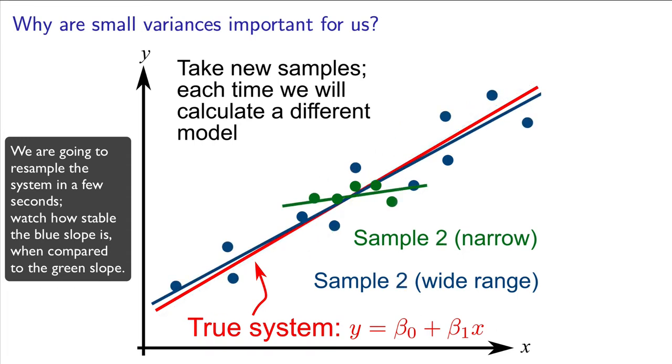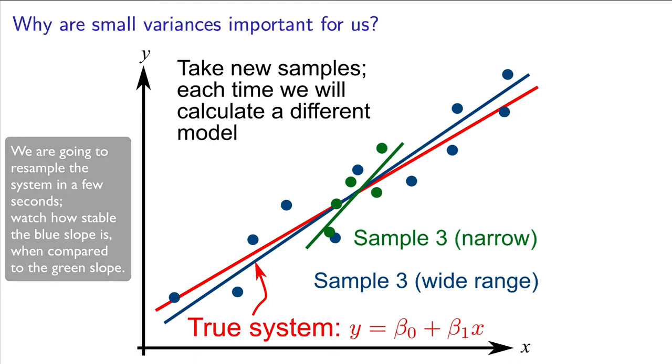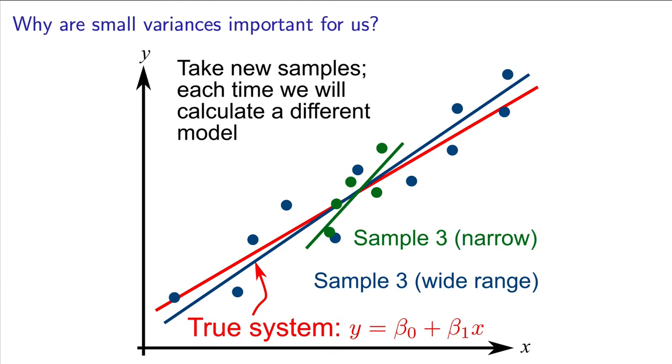Estimating over a small range, as shown over here, illustrates that the slope can take on any number of values, and therefore leads to a higher variance. So that summarizes the variance for b1.